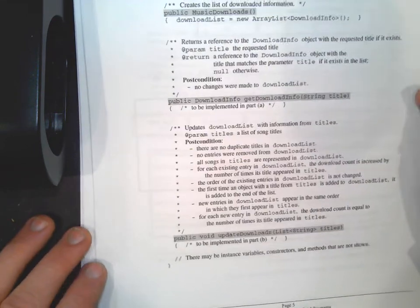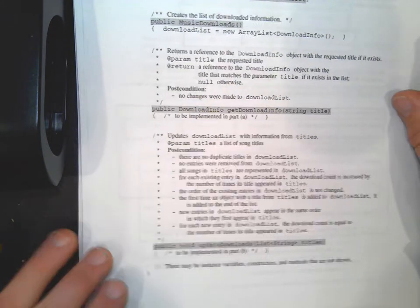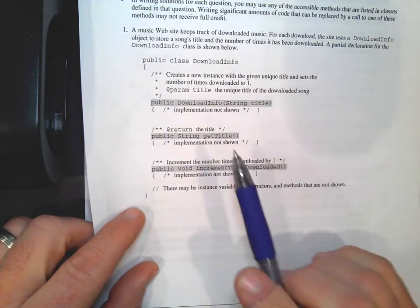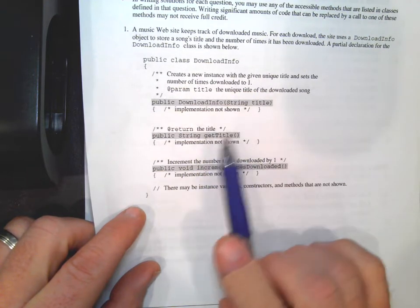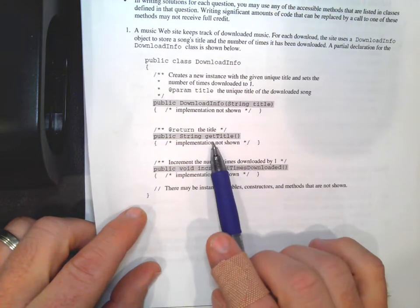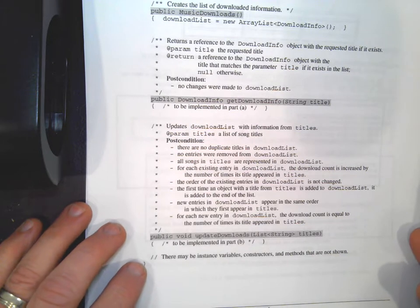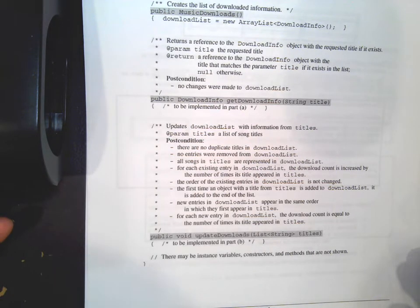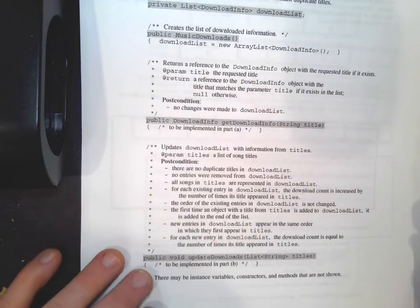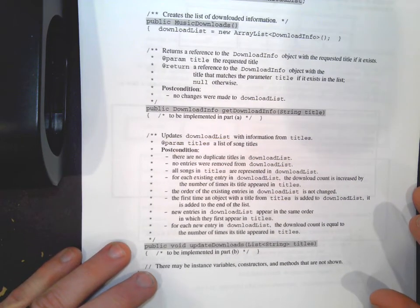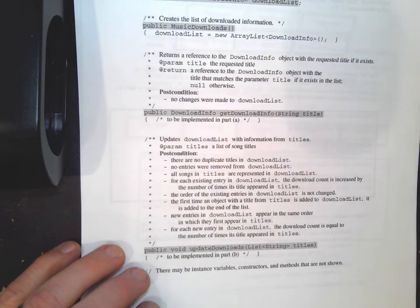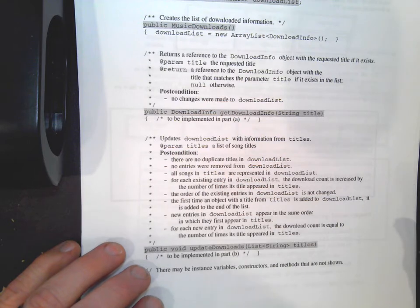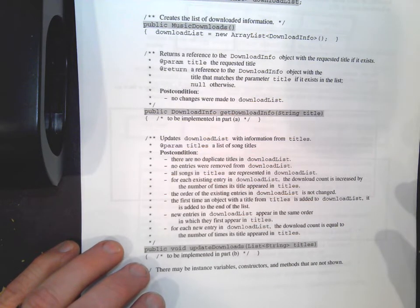Let's brainstorm how to do this. We have access to methods from the DownloadInfo class - we'll probably want to use getTitle because we want to match the current title to each one in the list since all we have is a string. We probably want some kind of for loop. A for-each loop could work - they're great for traversing ArrayLists - but sometimes have limitations. Let's try both ways to understand them better.